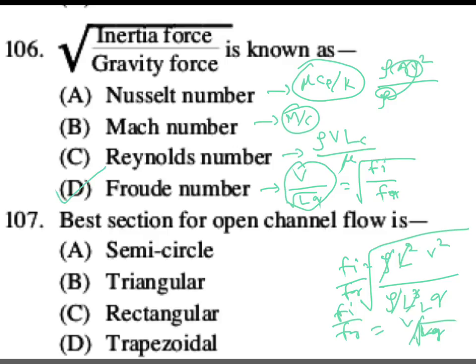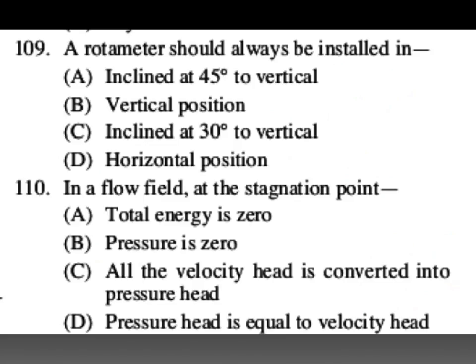The best section for an open channel is semi-circular, but since constructing a semi-circular section is difficult, we use trapezoidal sections. A rotameter should always be installed in a vertical position. B is your answer.